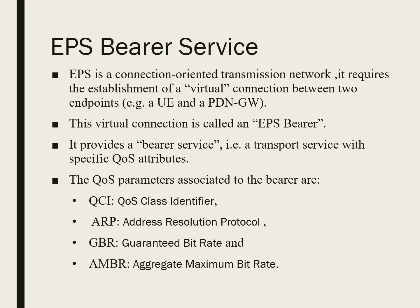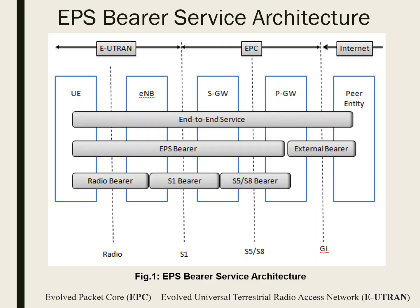EPS means Evolved Packet System. It is a connection-oriented transmission network and requires establishment of a virtual connection between two endpoints — the user equipment and the packet data network gateway. This virtual connection is called the EPS Bearer, and it provides a transport service with specific quality of service attributes: QCI (Quality of Service Class Identifier), ARP (Address Resolution Protocol), GBR (Guaranteed Bit Rate), and AMBR (Aggregate Maximum Bit Rate).